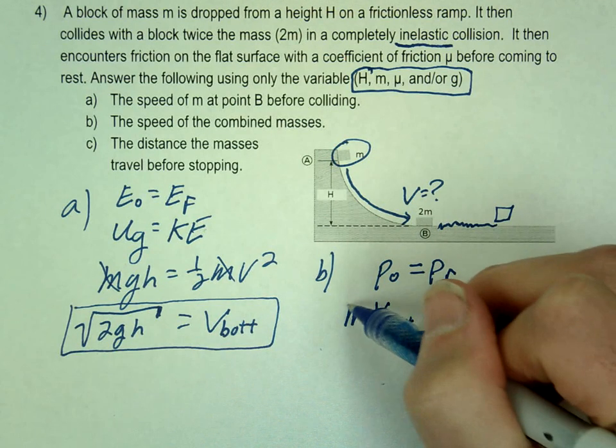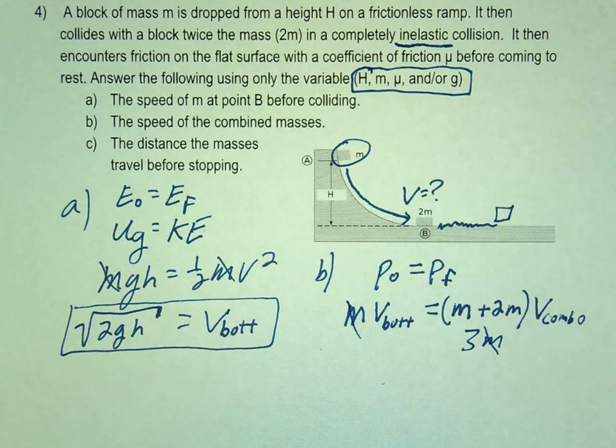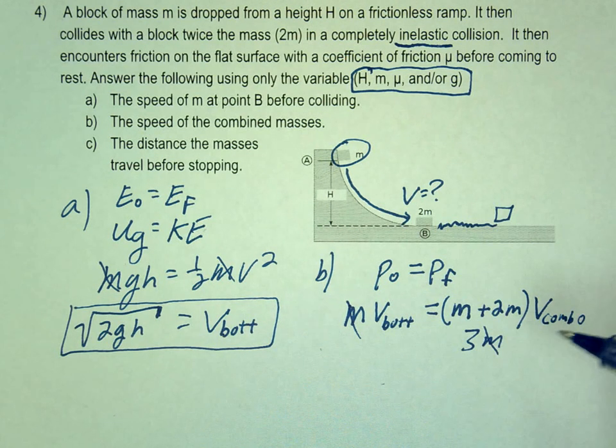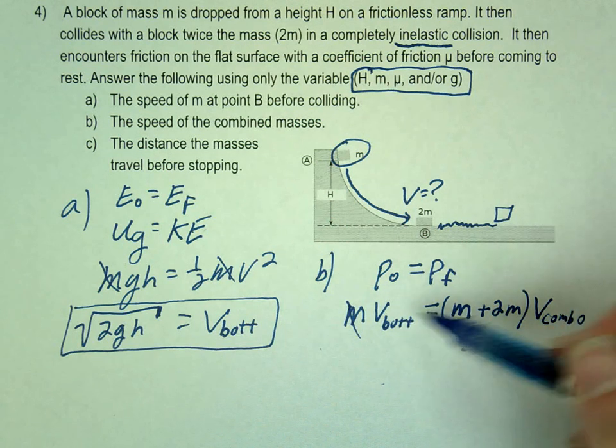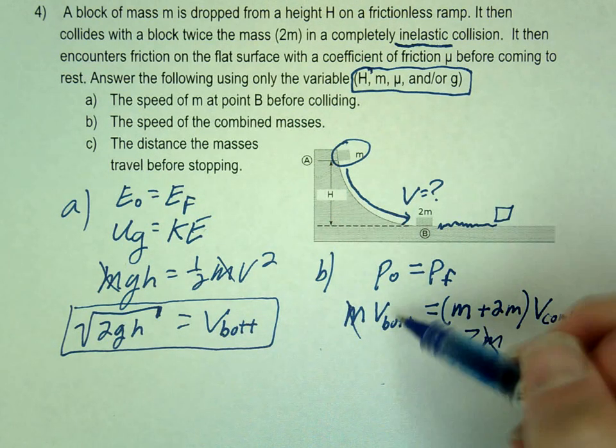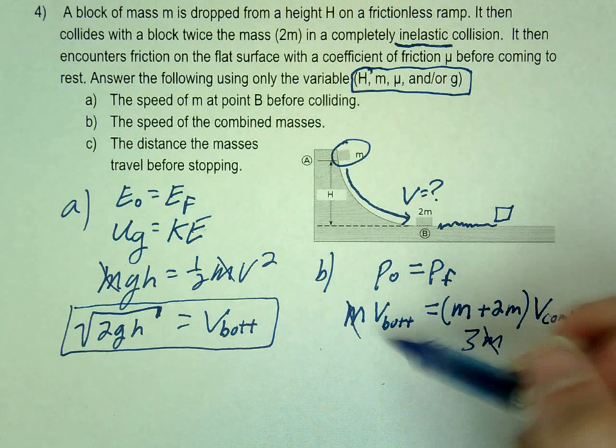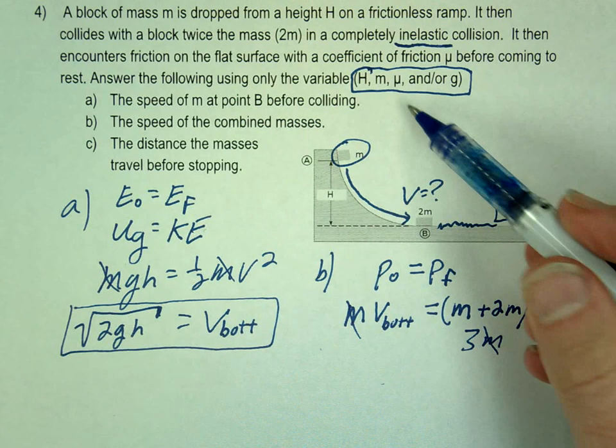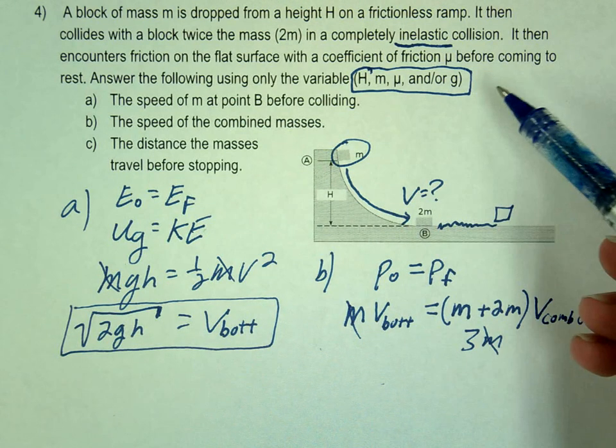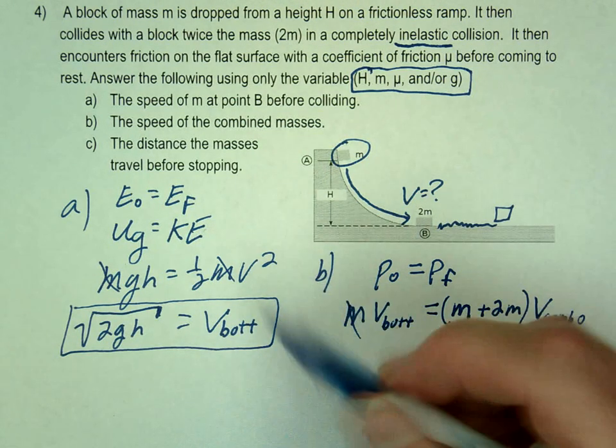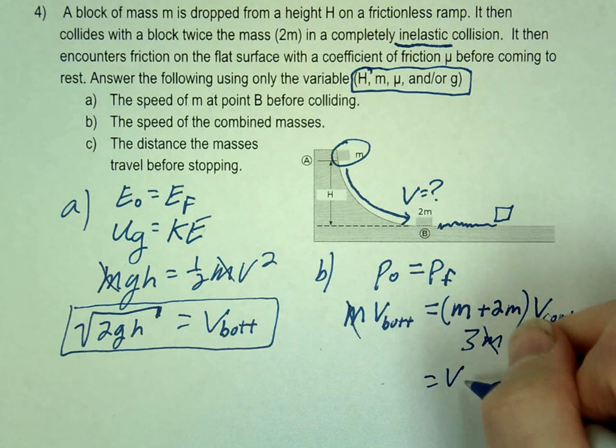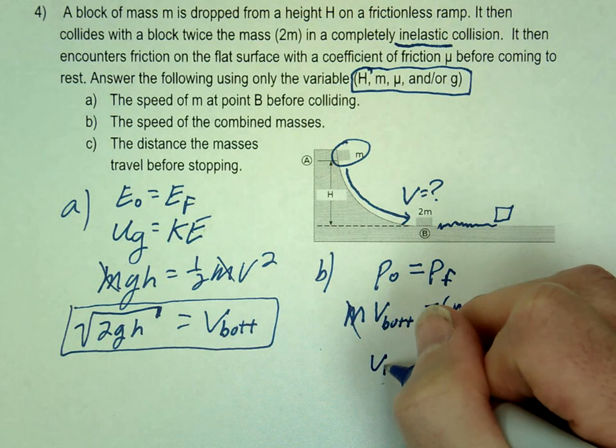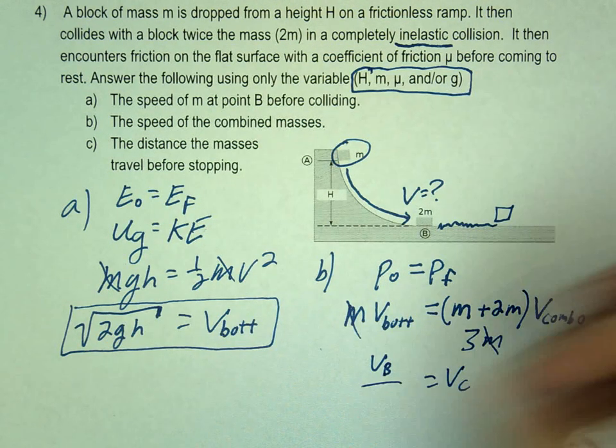So again, 1m cancels mm. So I have v bottom equals 3v combo, or v combo equals v bottom divided by 3. Is v bottom one of our allowed variables? No. We can only have H, m, mu, or g. So whenever that happens, don't leave it like this. That's not one of our allowed variables.